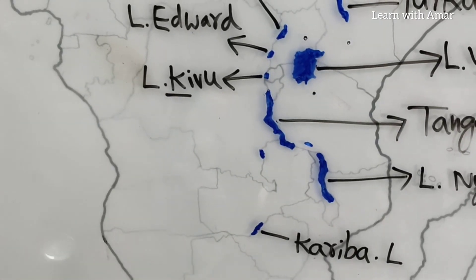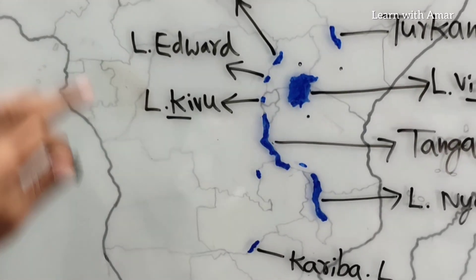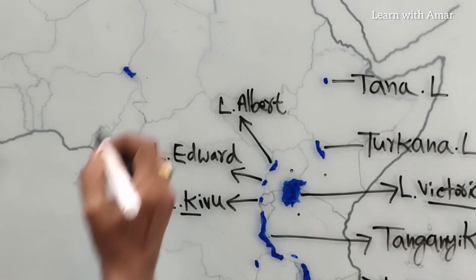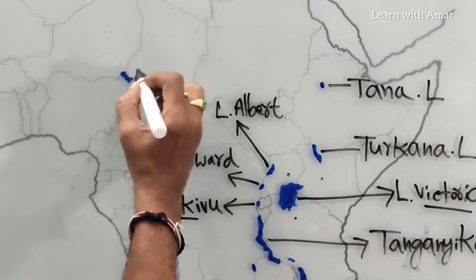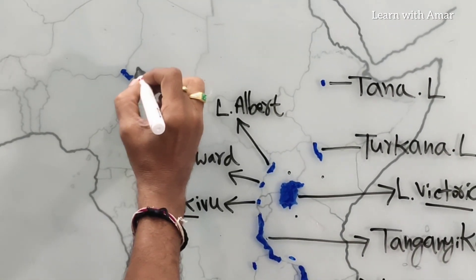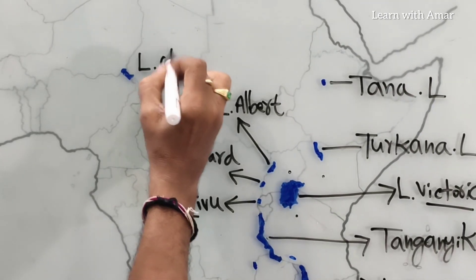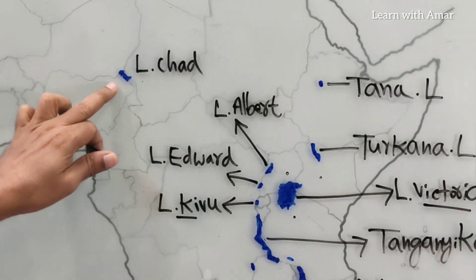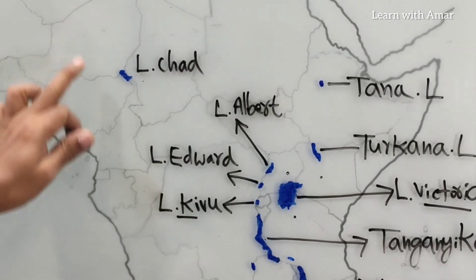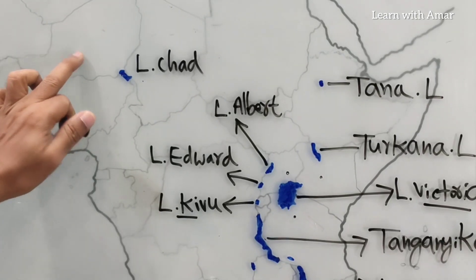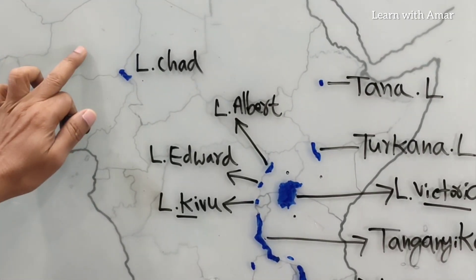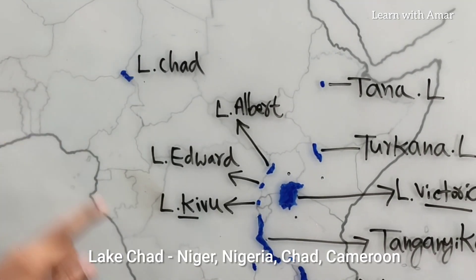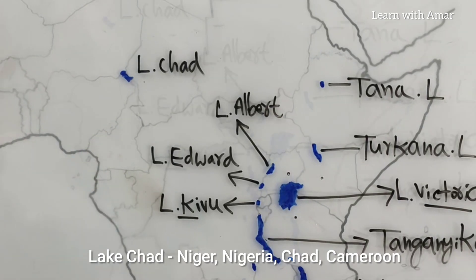Now, this one is named after a country — Chad. So the lake is known as Lake Chad. Lake Chad is located between four countries: Niger, Chad, Nigeria, and Cameroon.